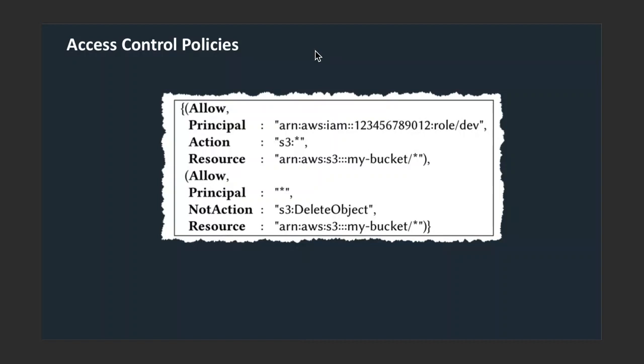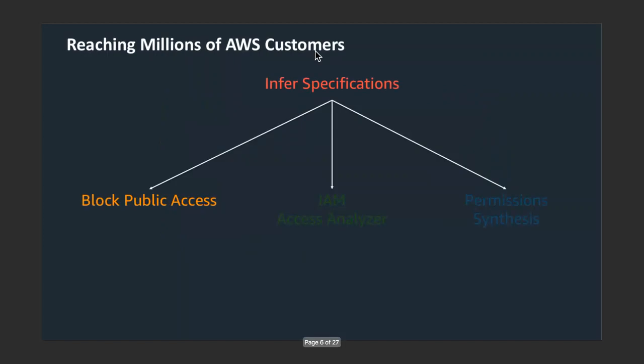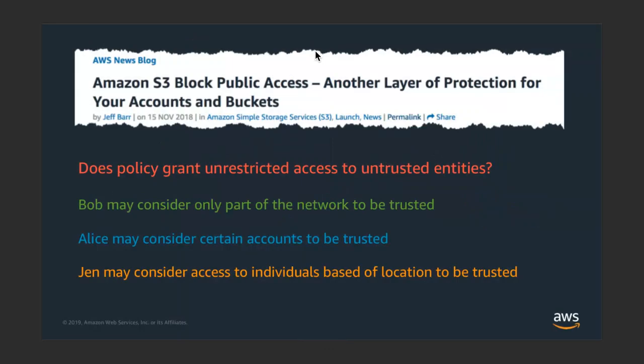How do we get the specification? We can't get millions of AWS users to write specifications — though we did try, and it didn't go so great. The key insight is we need to infer specifications automatically, but do it in a way that is customized to each user. The first application of this is block public access.